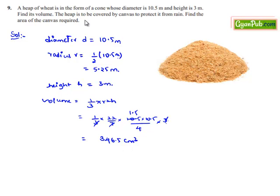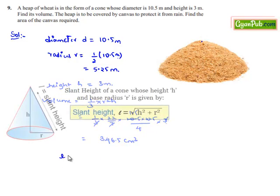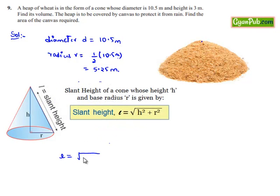He asks us to find the area of canvas required to cover the heap, that is the curved surface area. We have the curved surface area of cone as πrl. So here we need to initially find the l, that is the slant height, which is given by square root of r² + h².